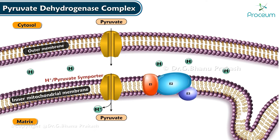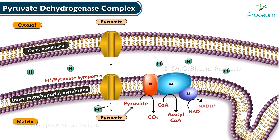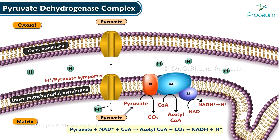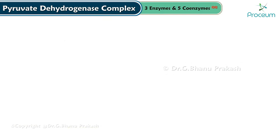In the mitochondrial matrix, pyruvate is oxidatively decarboxylated to form acetyl coenzyme A. The oxidation of pyruvate to acetyl coenzyme A is an irreversible reaction. This is the link reaction between glycolysis and the citric acid cycle. The overall reaction of the PDH complex is as follows.